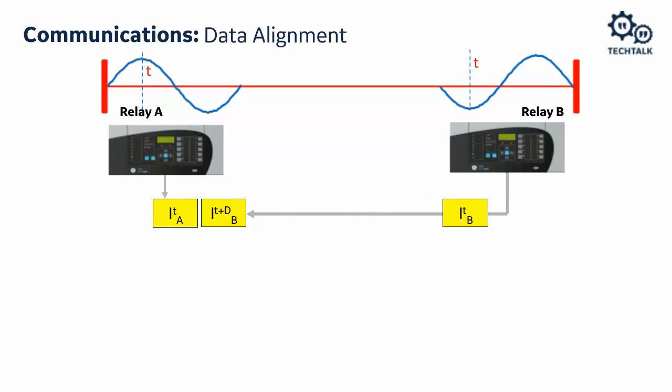At time T, relay A receives a sample; at the same time T, relay B also receives a sample. They send samples to each other, but relay A will receive the sample from relay B with some delay — denoted D. At the moment it receives that data, the data that needs to be aligned to it must have been stored in buffers.